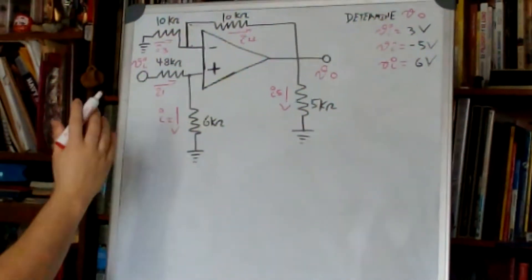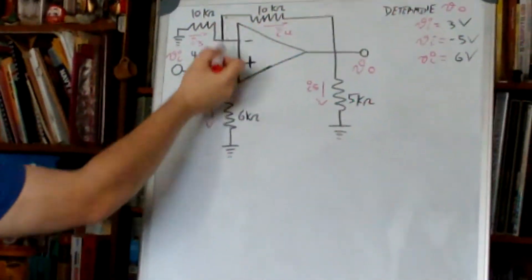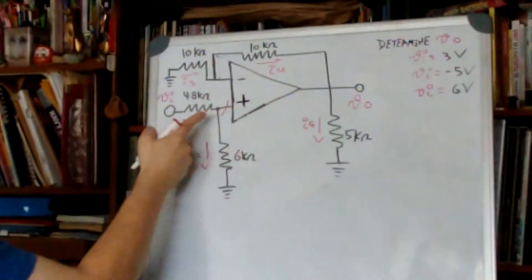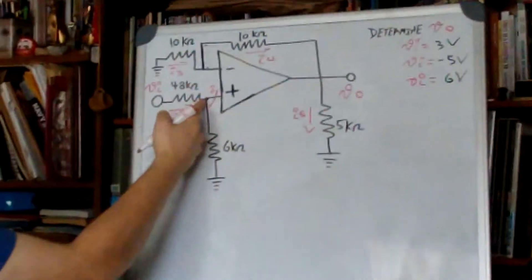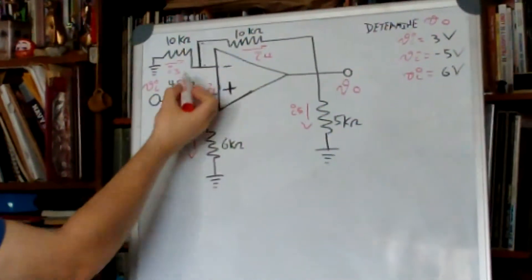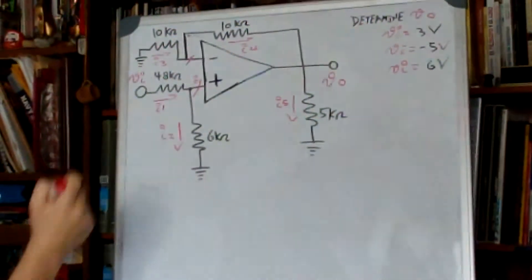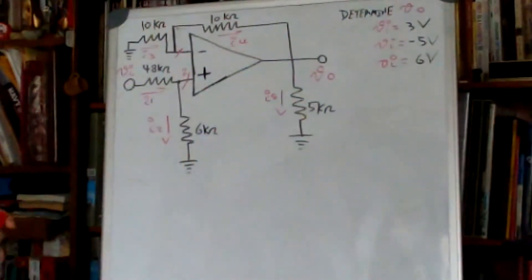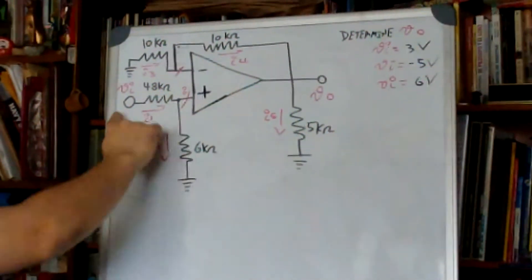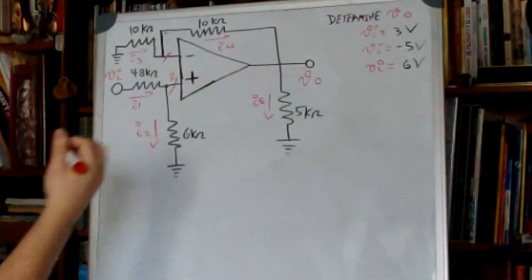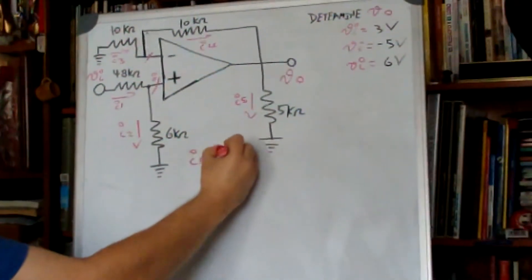We know that an ideal operational amplifier has a high input impedance. This means that the current going in or out is zero, so there is no current through these wires. This means that i1 is equal to i2 because there is only one path.